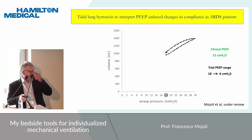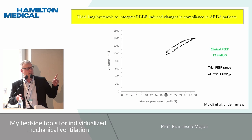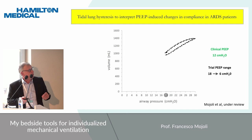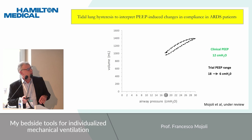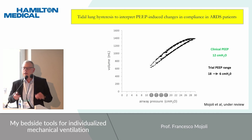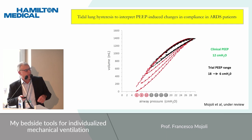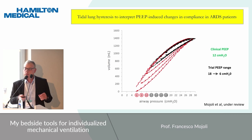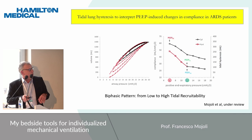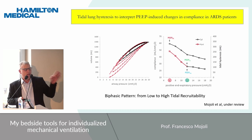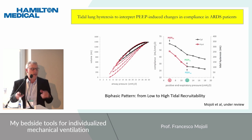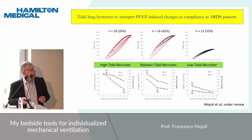And then we have a third and last pattern — last but not least, because this was actually the relative majority of patients. This patient had a clinical PIP of 12, so we studied a range of PIP between 18 and 6. Moving from 18 to 16 to 14 to 12, again nothing happened. But as soon as we decreased PIP below this level, there was a fast exponential increase of tidal hysteresis. We call this the biphasic pattern or biphasic tidal recruitment. In this case, the physician was right — the PIP set by the physician was the lowest value of PIP able to avoid tidal recruitment.